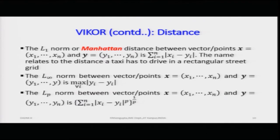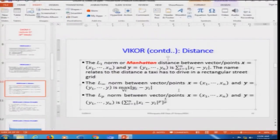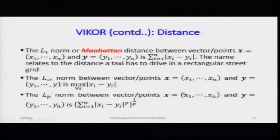The L∞ norm between vectors x = (x_1, ..., x_n) and y = (y_1, ..., y_n) gives the maximum of |x_i − y_i|. The LP norm is computed as the sum of |x_i − y_i|^p raised to the power 1/p — you scale up by the p-th power and then bring it back down, and the result varies with the choice of p.